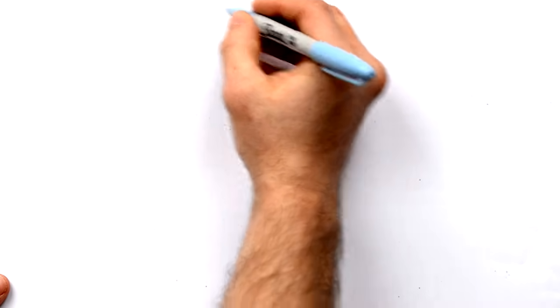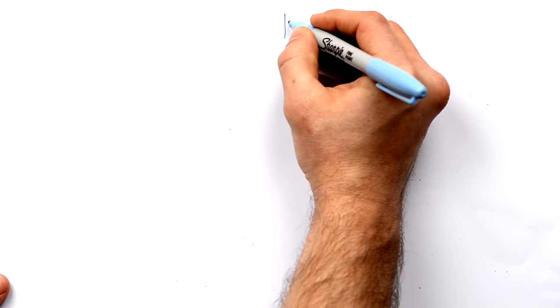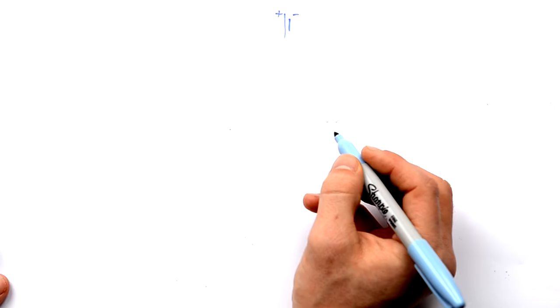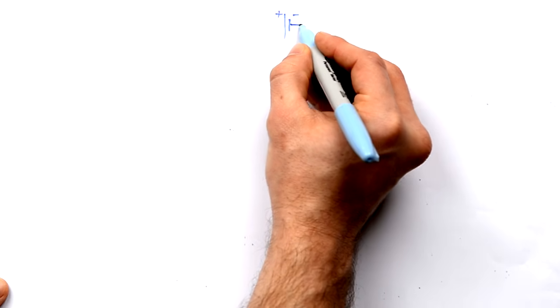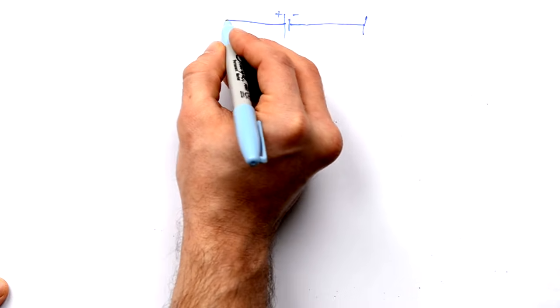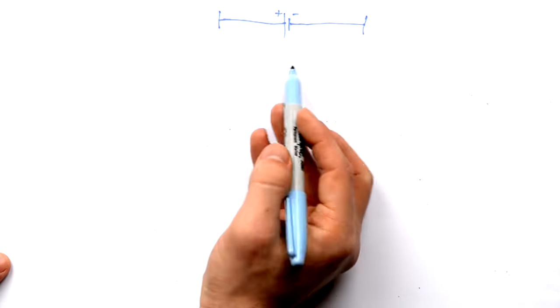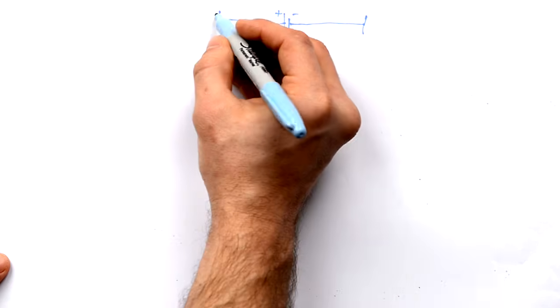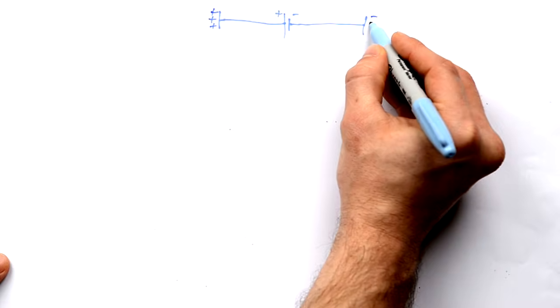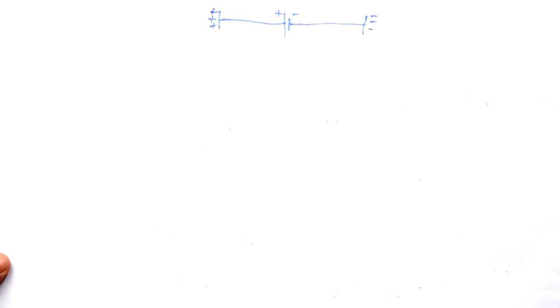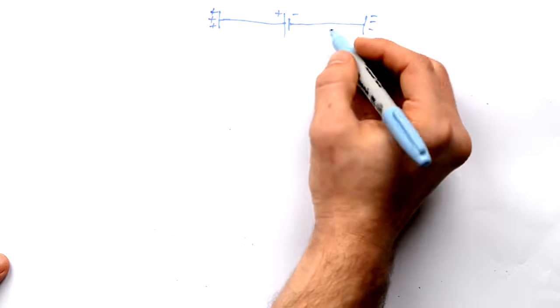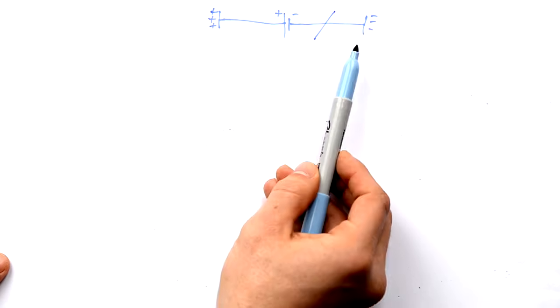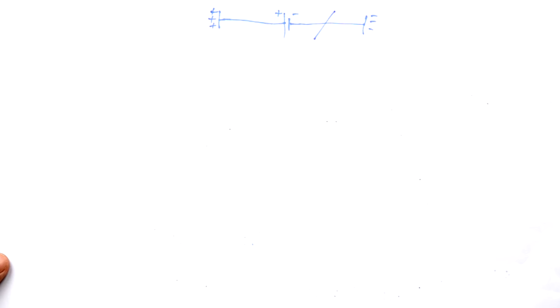Let's say we have a battery — batteries give energy to electrons. This is the positive side, this is the negative side, and we just have a circuit with two plates. When we turn it on, the battery takes electrons from one plate and pushes them onto the other. So one plate becomes positively charged and the other becomes equally and oppositely negatively charged. If we then cut the circuit, we have two charged plates, but that doesn't work very well for storing charge.